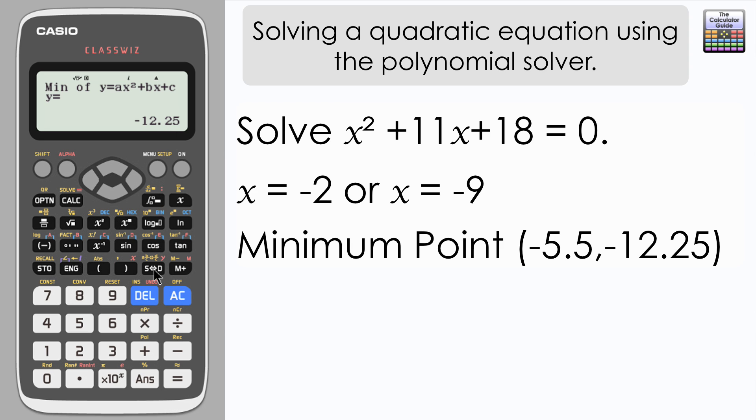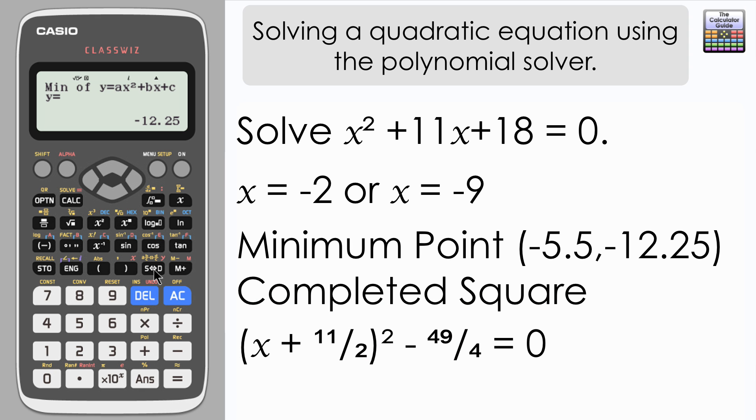This also helps you to set up the completed square version of the quadratic equation. So the value of x of minus 11 over 2 is what makes the bracket equal to zero when you add 11 over 2. So it's x plus 11 over 2 squared, and then subtract the y value, so minus 49 over 4. We can set up the completed square version equal to zero.